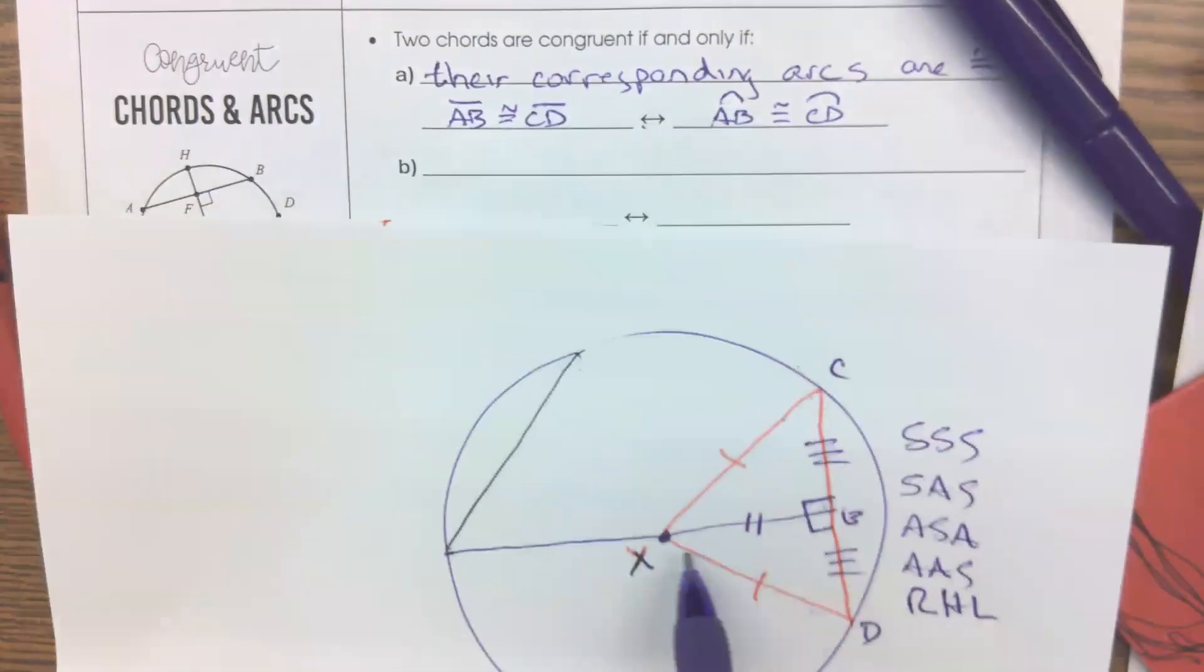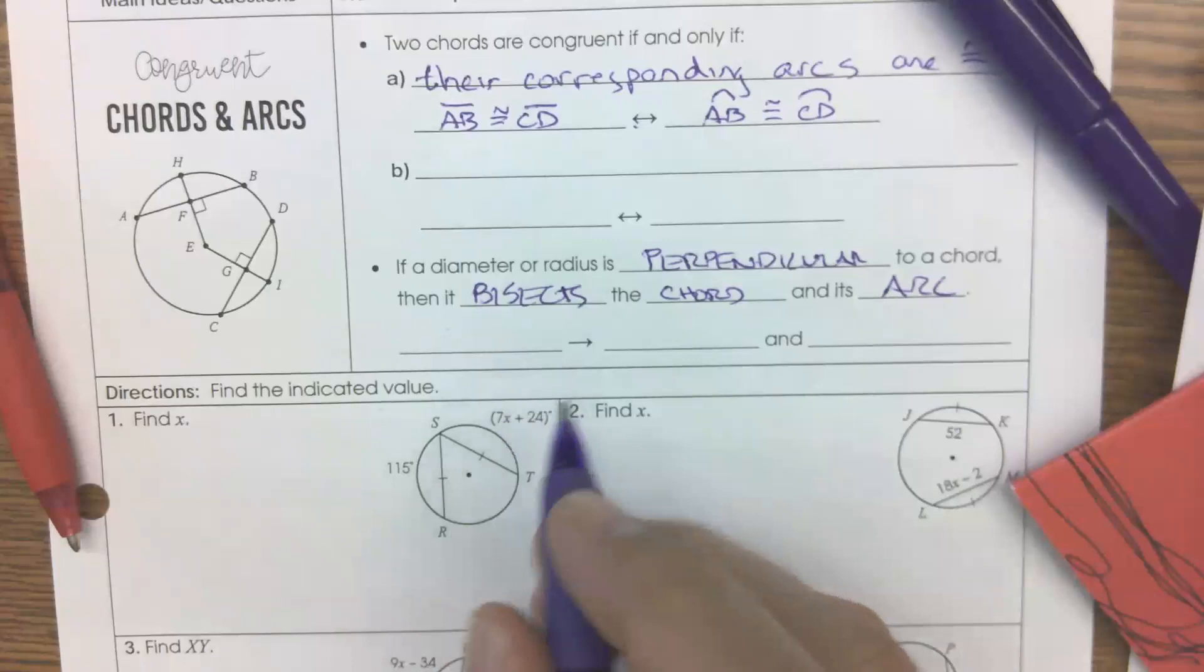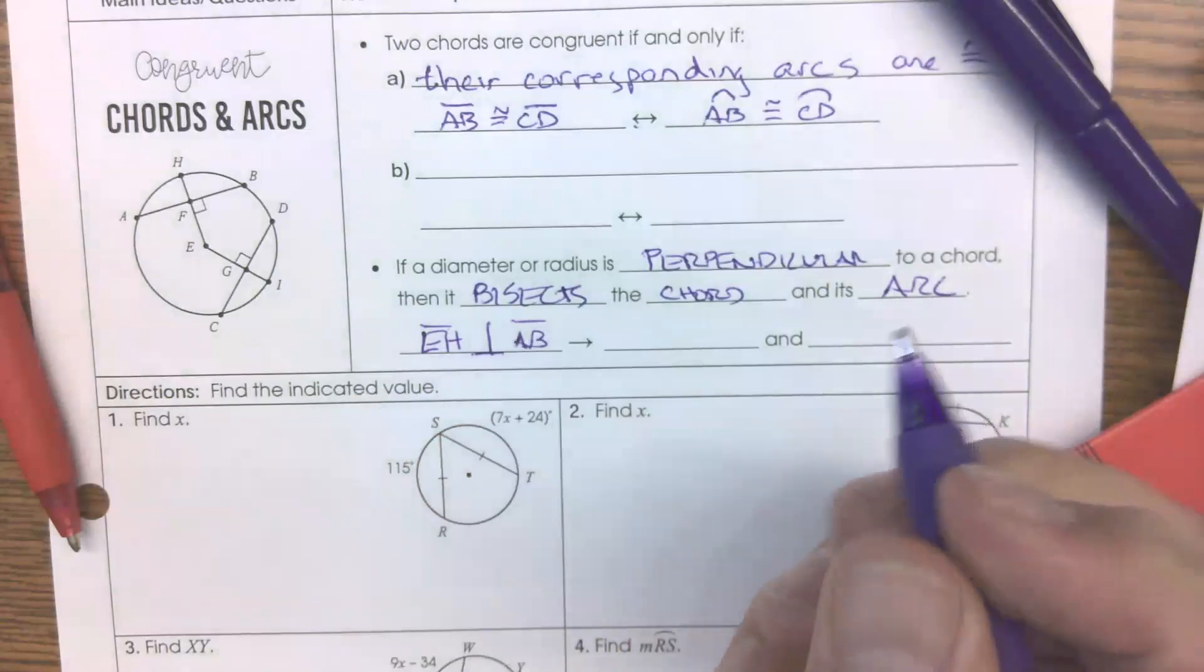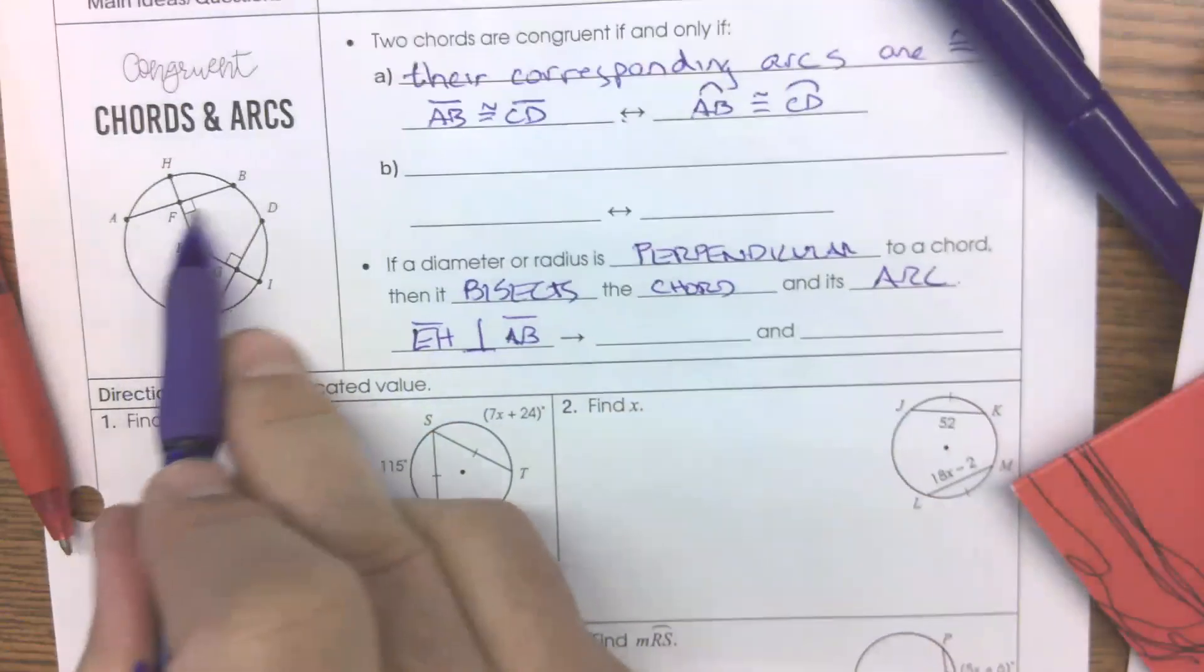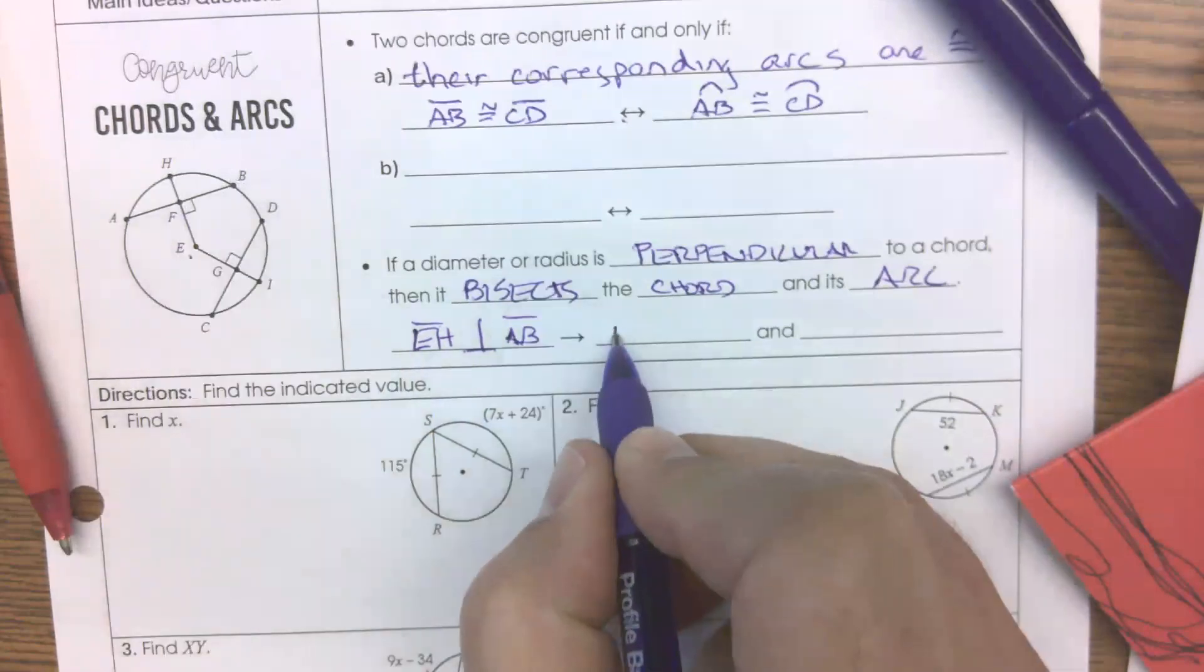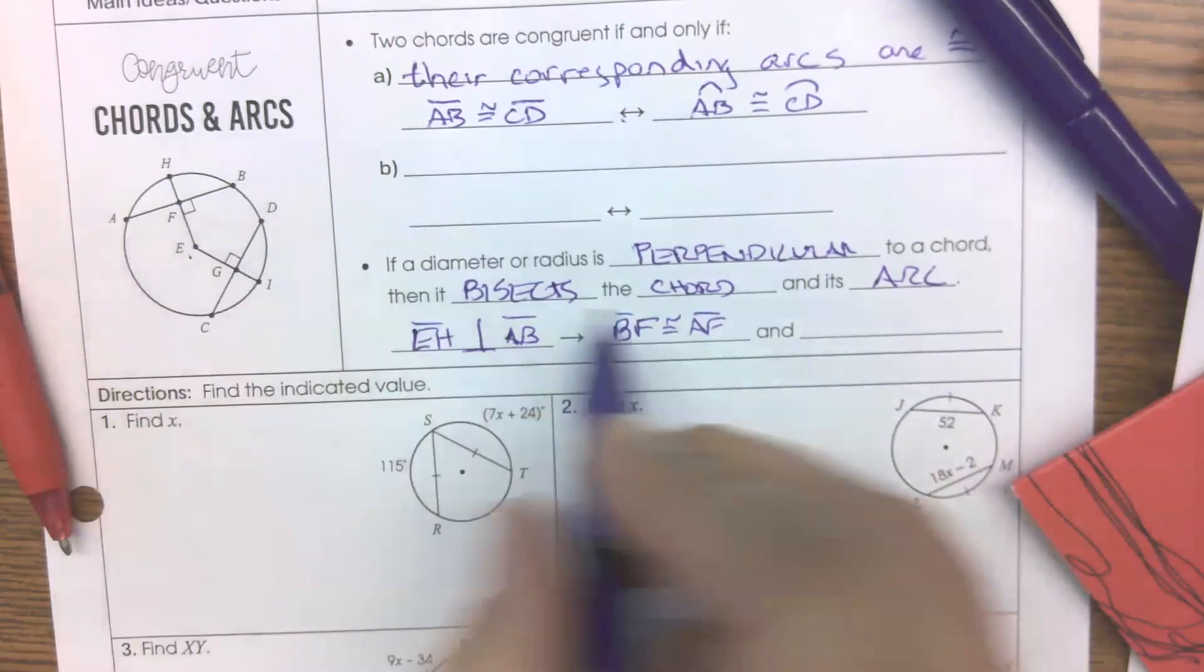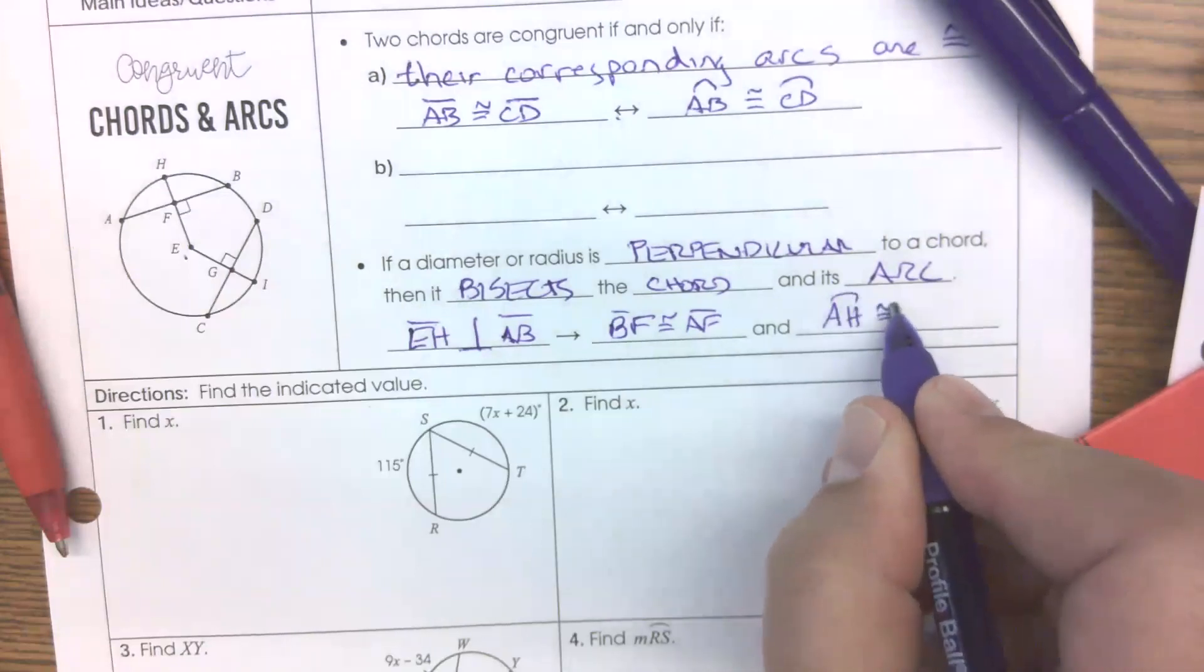And its arc. Because if this bisects into two congruent triangles, then aren't these two angles congruent? And these are central angles because they're formed at the center. Please stop the side conversations. So if these two central angles are congruent, then the arcs that these angles meet would also be congruent. So therefore, if EH is perpendicular to AB, then we know that AF and BF are congruent. It's been bisected. And we know that arc AH would be congruent to BH.